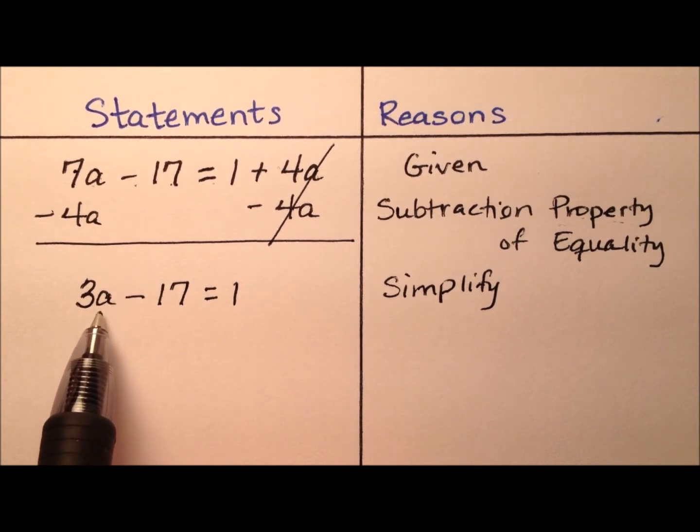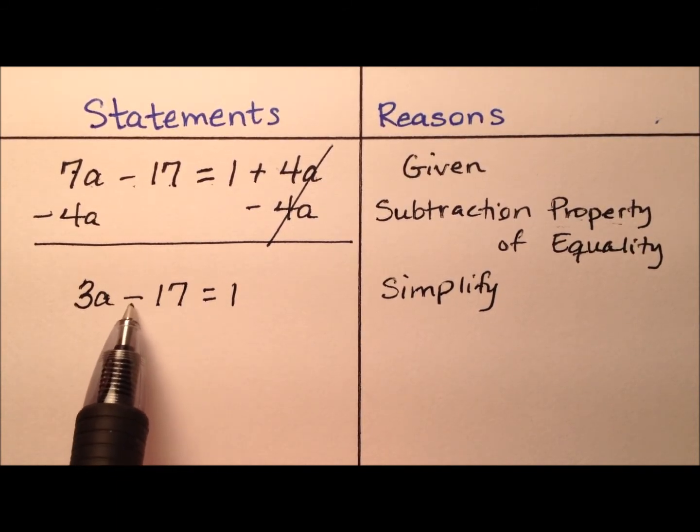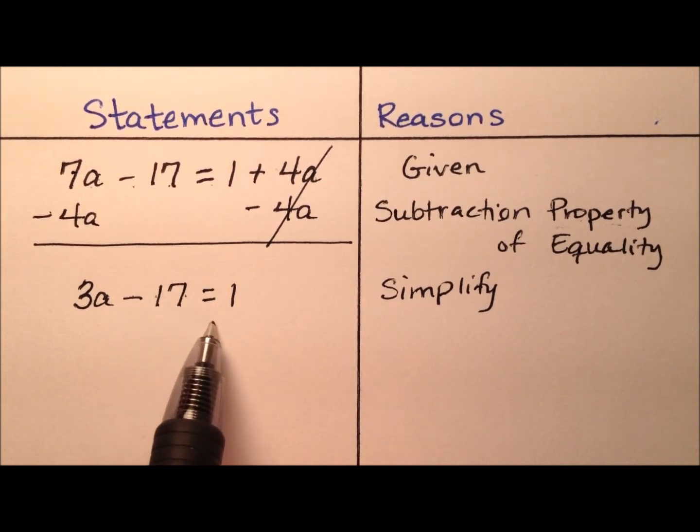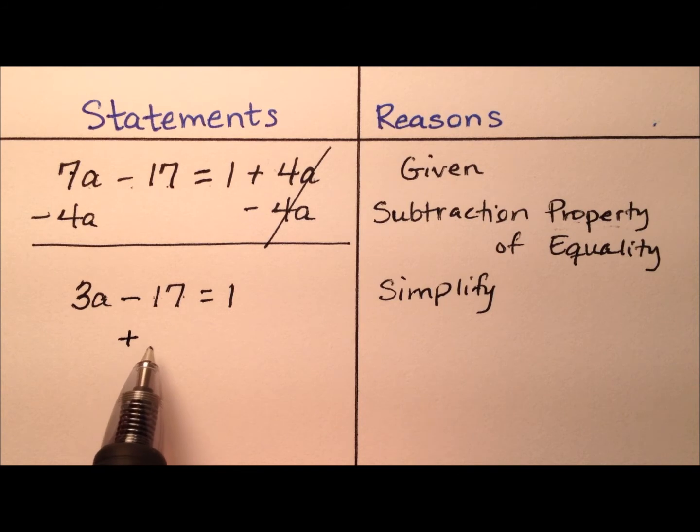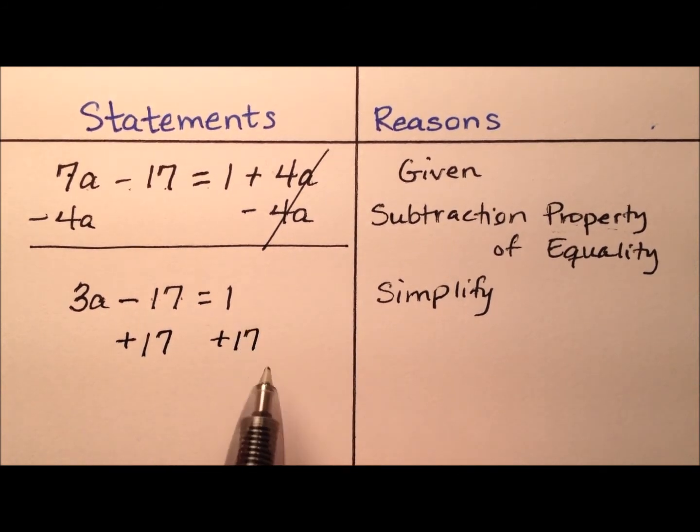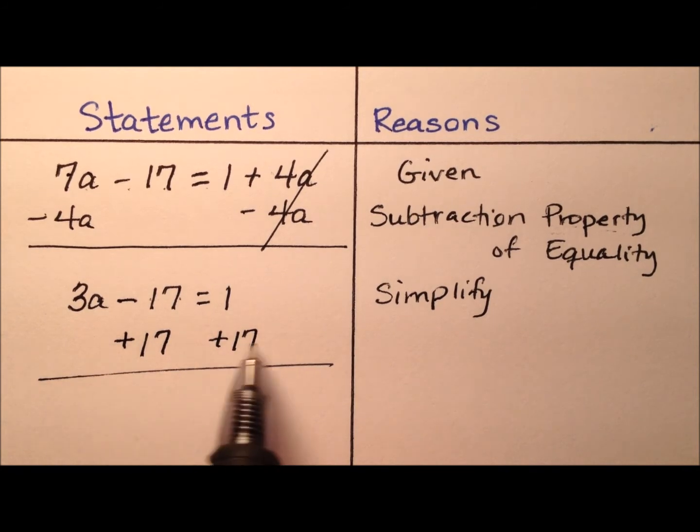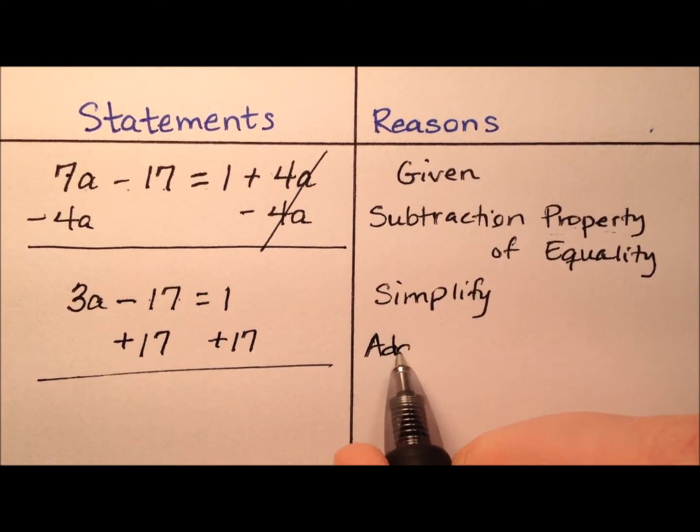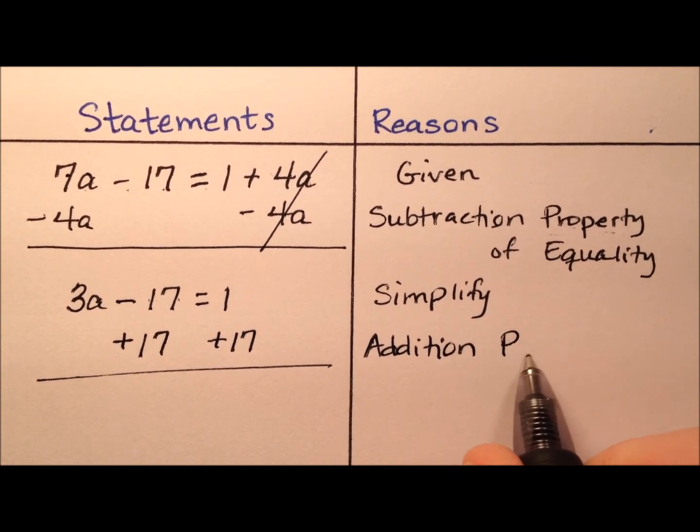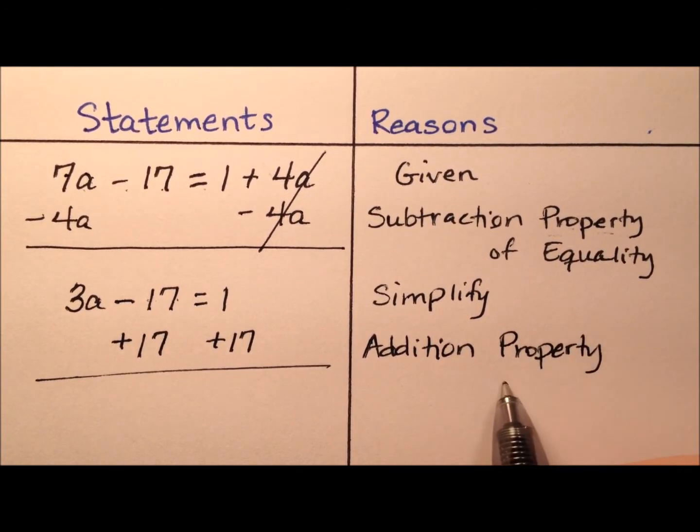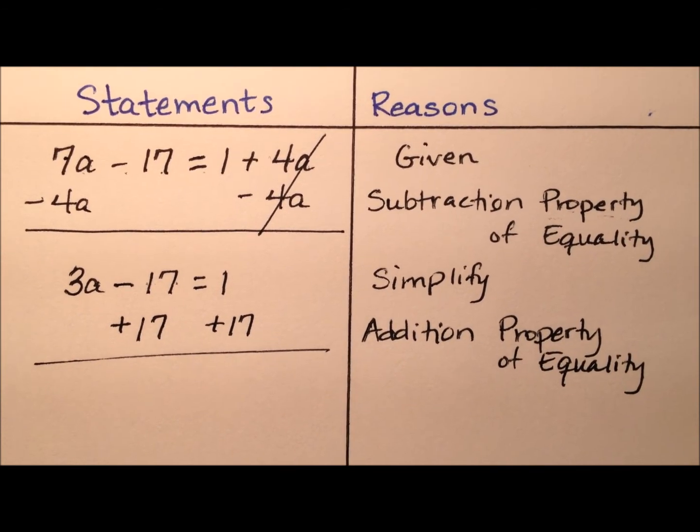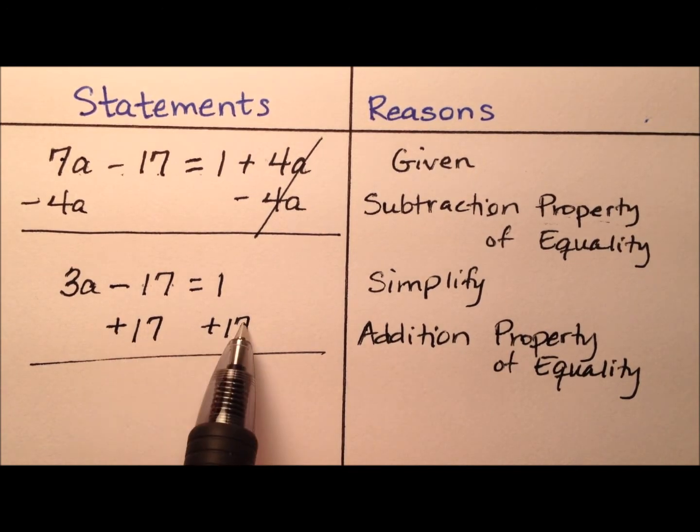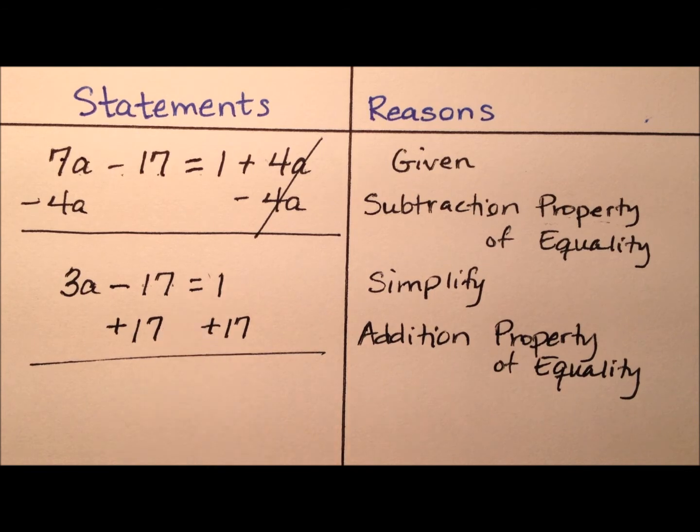We now have our variable terms on the left. So let's go ahead and get this constant, this minus 17 off of the left side and onto the right side along with this 1. Right now we see the 17 is being subtracted, so let's go ahead and do the inverse operation of subtraction, and add 17 to both sides of the equation. So what property will allow us to do this? Well, we call this the addition property of equality.